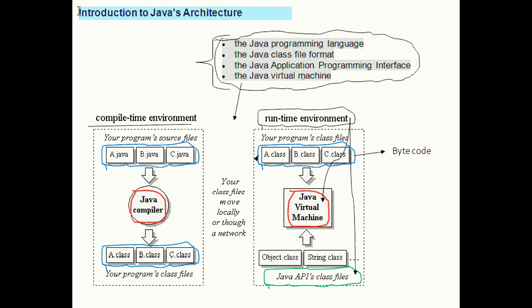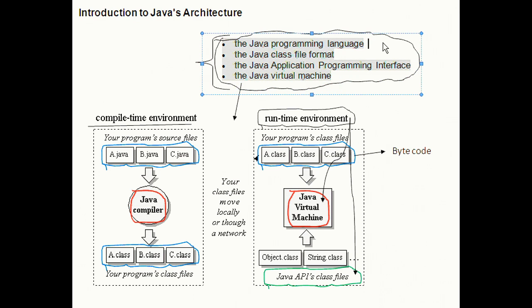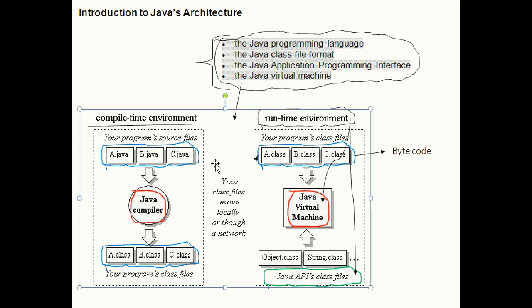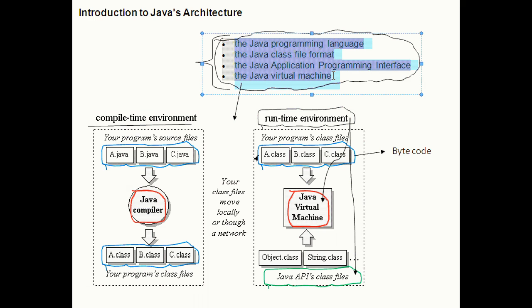Introduction to Java's architecture. Here we have four interrelated technologies of Java architecture: the Java programming language, the Java class file format, the Java Application Programming Interface (Java API), and finally JVM or Java Virtual Machine. This diagram shows the relationship between these four parts of Java architecture.